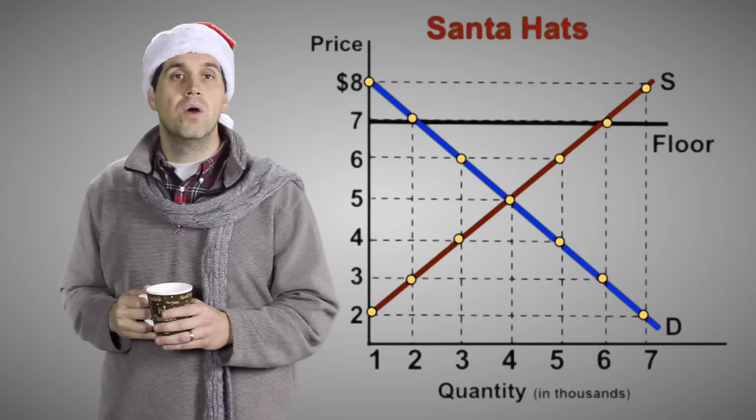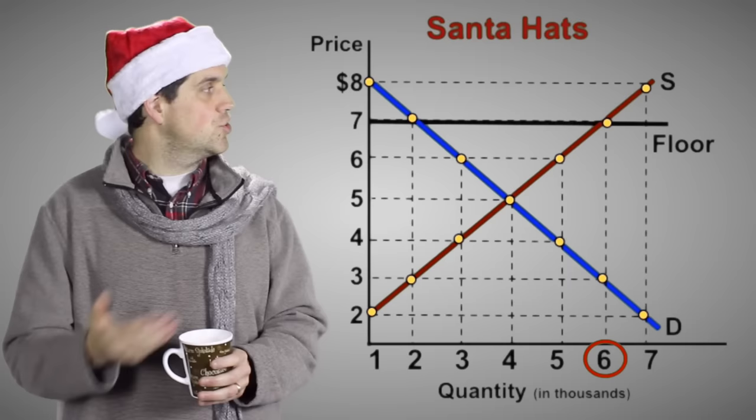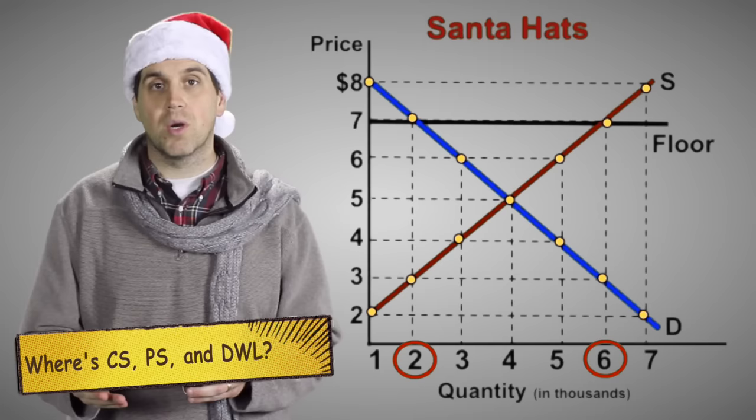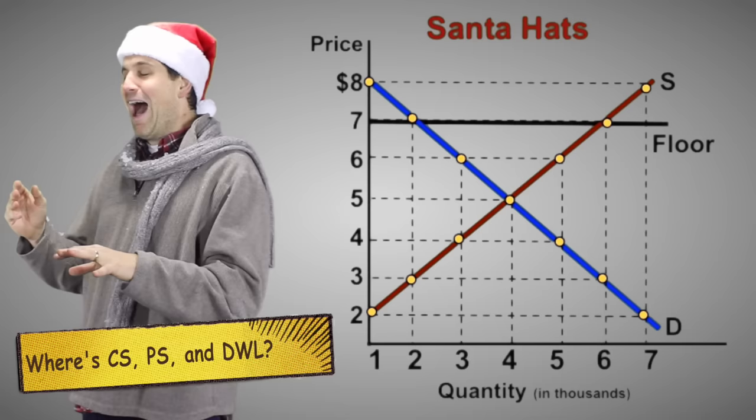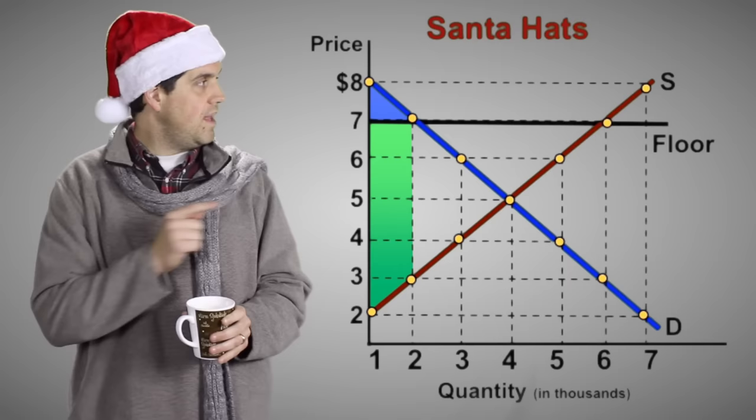Let's do it again, except this time let's see what happens when there's a price floor. The government says the price can't go lower than $7, and the result is a surplus. Producers want to make 6,000 units, but consumers are only willing to buy 2,000 units. The price is higher, so consumer surplus becomes smaller — it's right there — and the producer surplus is right here, so right there's the dead weight loss.